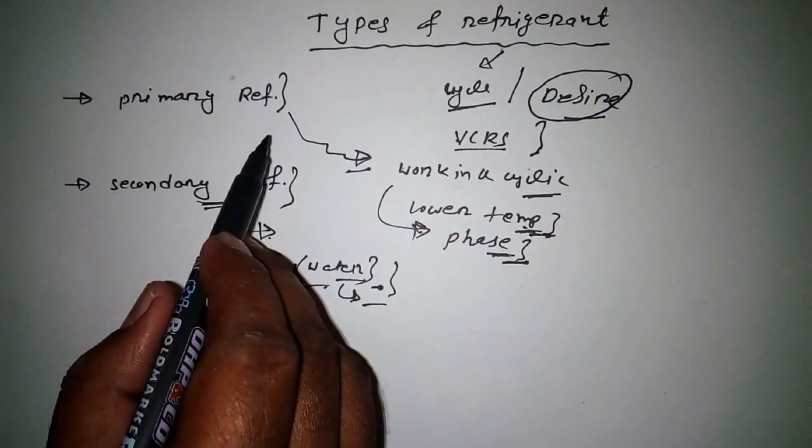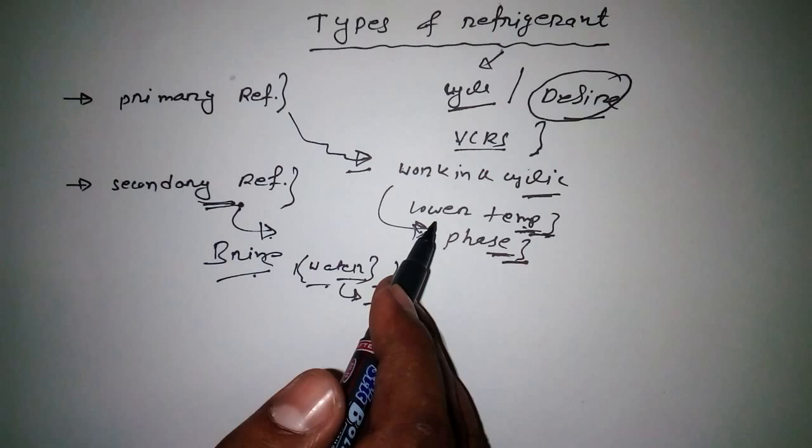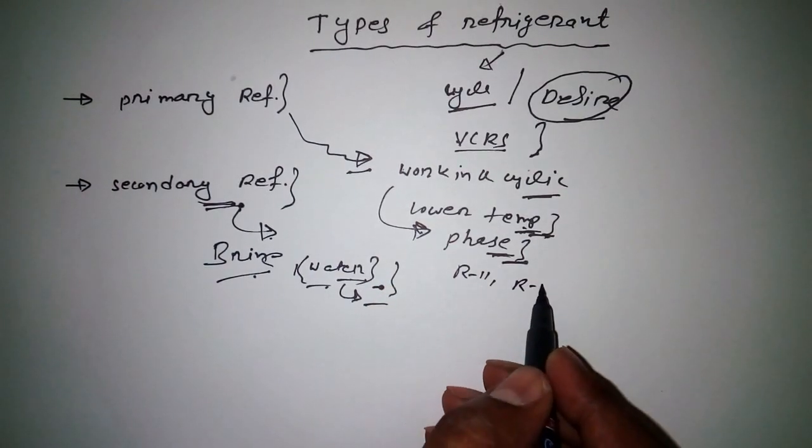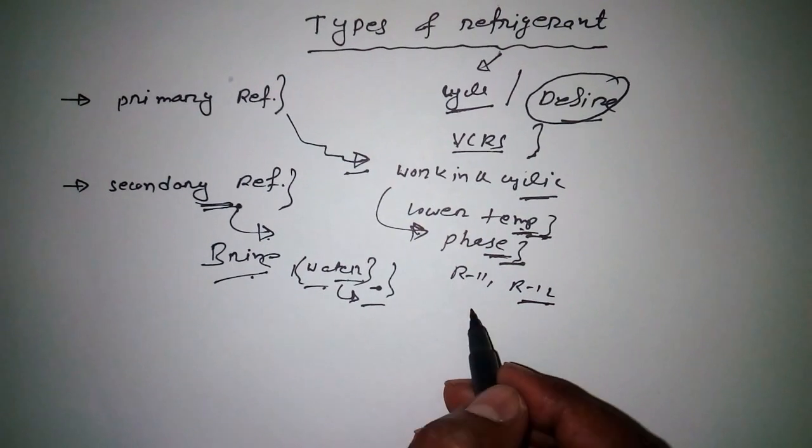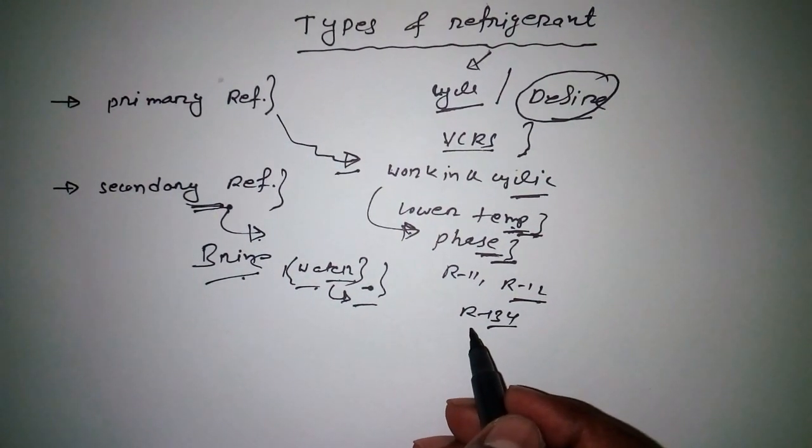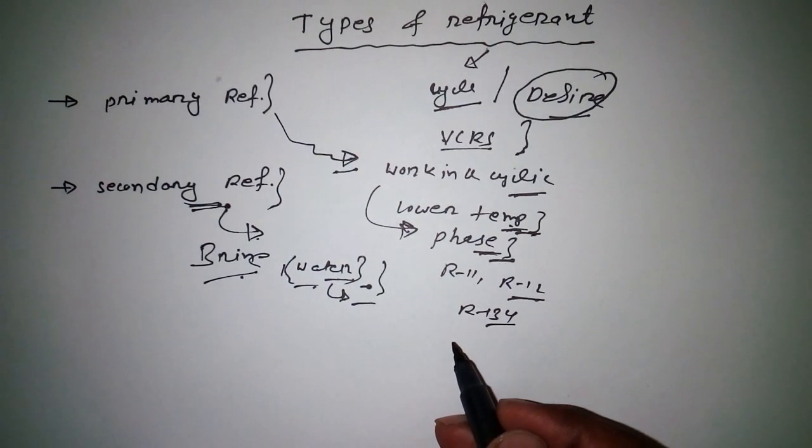Now let's see examples of primary refrigerant: R11, R12, and R134, which is an eco-friendly refrigerant. We will discuss later about all these types and the designation of refrigerants, where we can understand what is eco-friendly refrigerant and why it is known as eco-friendly.